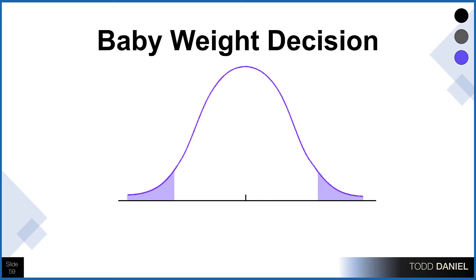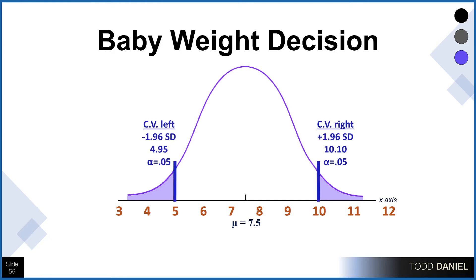Returning to our baby weight example, we have our distribution of sample means. I've put an x-axis with pounds on it. The mean for the population is around 7.5. We then establish a lower and upper critical value: negative 1.96 standard deviations, which amounts to a weight of 4.95 pounds, at an alpha level of 0.05. The upper cutoff is positive 1.96, a weight of 10.1 pounds, also at alpha 0.05. All sample means under the curve have a probability greater than 0.05 — it's very likely we'll get a sample mean close to the population mean. Only scores outside of the fences are statistically significant, p less than 0.05.